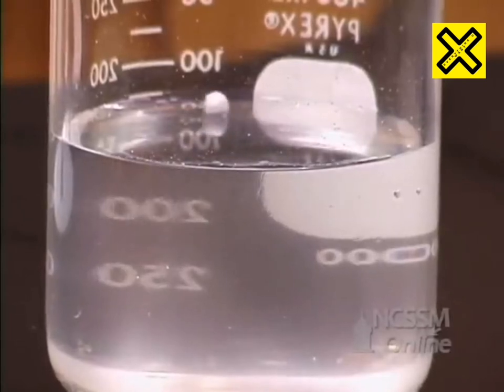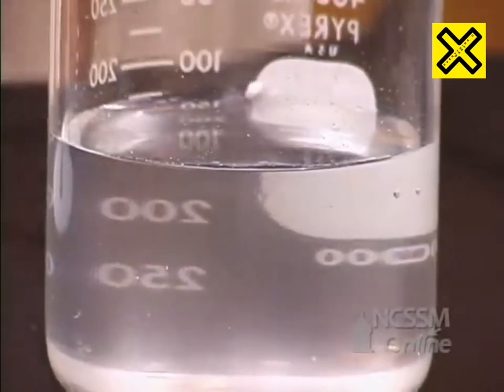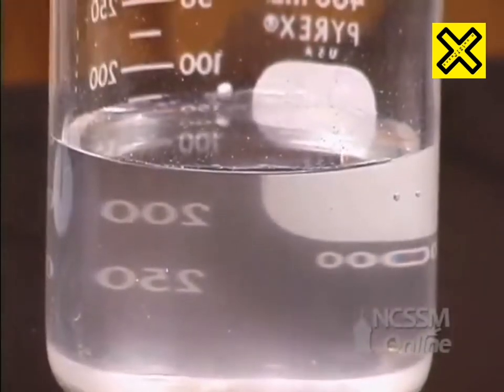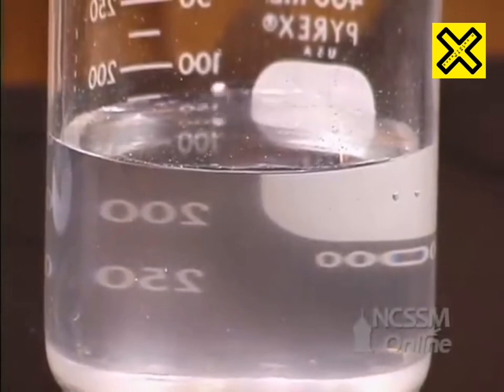The metal moves across the surface, being pushed by the hydrogen gas that is produced. As you go down the column with group 1 metals, the melting point of the metal decreases.